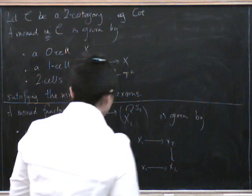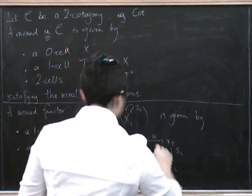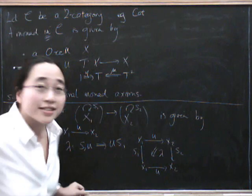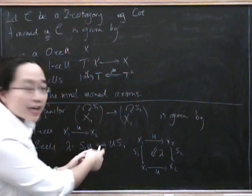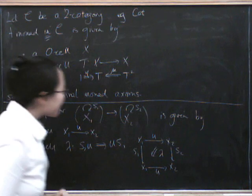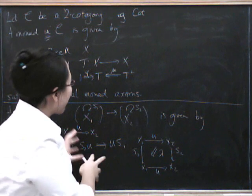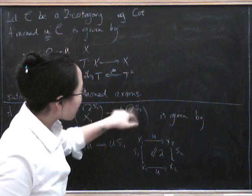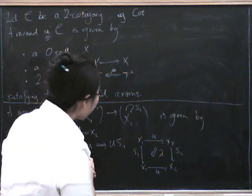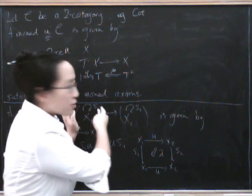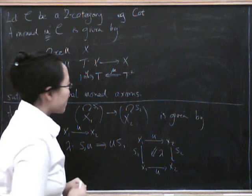We can draw this as a square: here's U across the top, U again across the bottom, S2 on the left, S1 on the right, and our lambda lives in the middle. You might think this is going backwards, since we're going from S1 to S2 in one sense, but the two cell goes from the twos to the ones. The point is: if you think of these as ordinary monads on categories, and you think about the algebras for each monad, you want a functor from these algebras to those algebras — and to do that you need this lambda going in this direction, otherwise everything goes backwards.